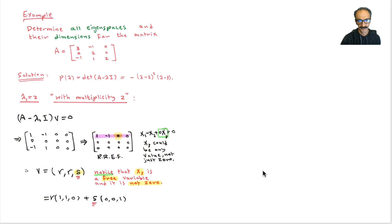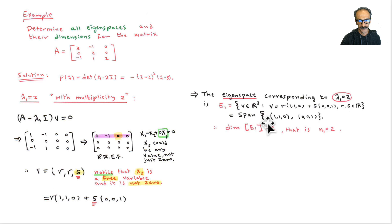Factoring out r and s, as we did back in chapter four, we get two vectors. Lambda equals 2 gave me two vectors. Note: just because it's repeated twice doesn't necessarily mean you get two vectors — that depends on the reduced row echelon form. The eigenspace corresponding to lambda_1 equals 2 is written as E_sub_1 equals the set of vectors v in R^3 such that v equals r times (1, 1, 0) plus s times (0, 0, 1), where r and s are scalars. In short, we use the span: span{(1,1,0), (0,0,1)}.